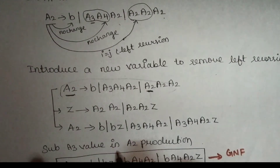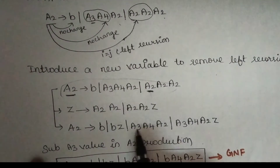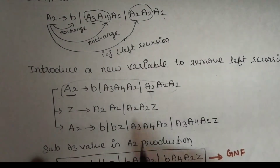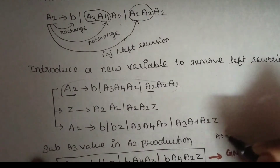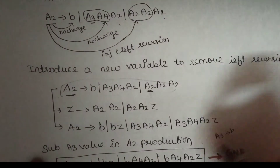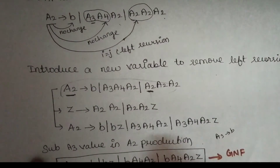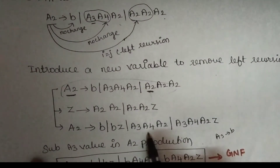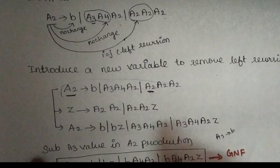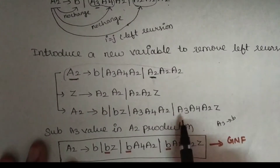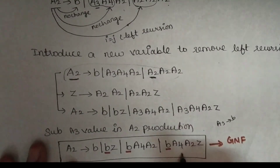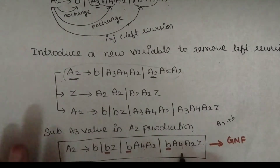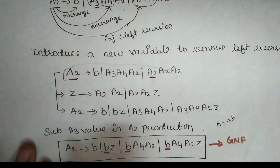We substitute A3 value into A2 productions. A3 value is here: A3 goes to B. A4, A2 is here. This is B. Now this is the production. First, there is a terminal.